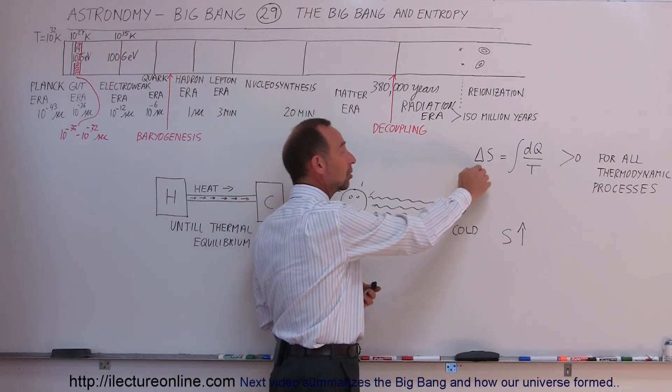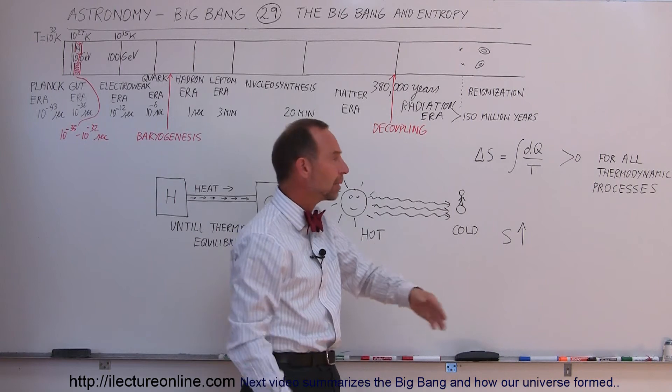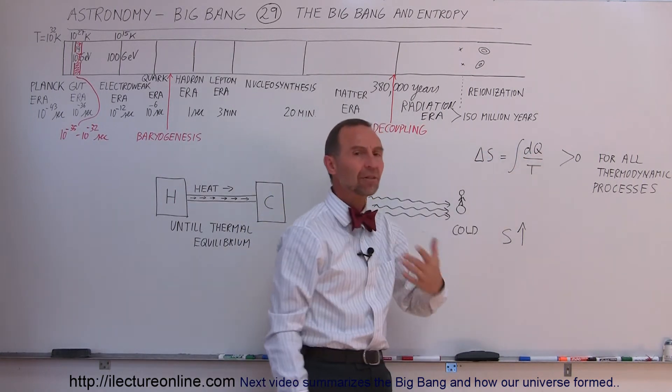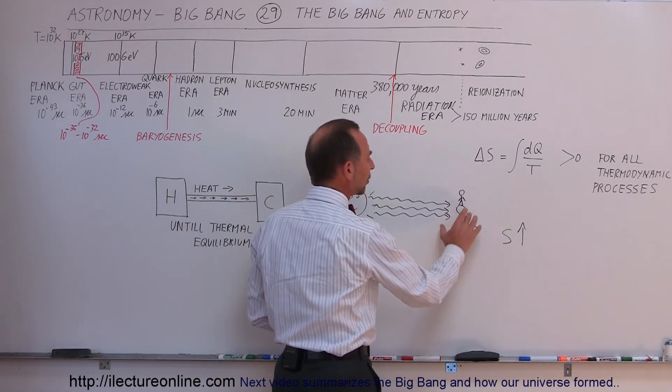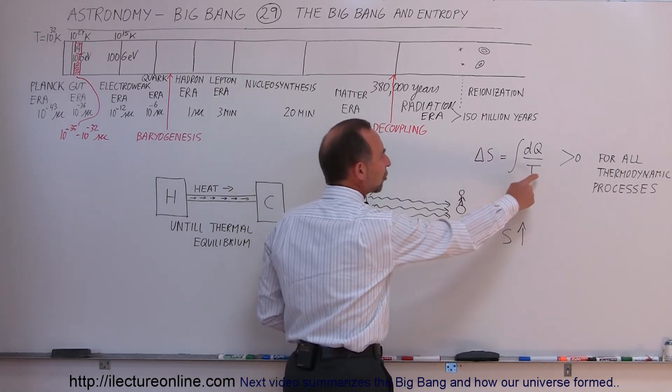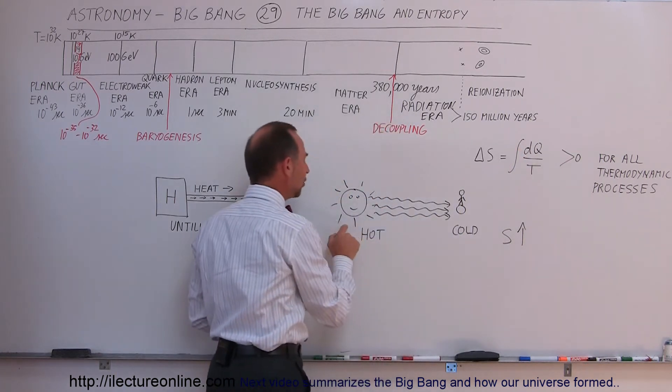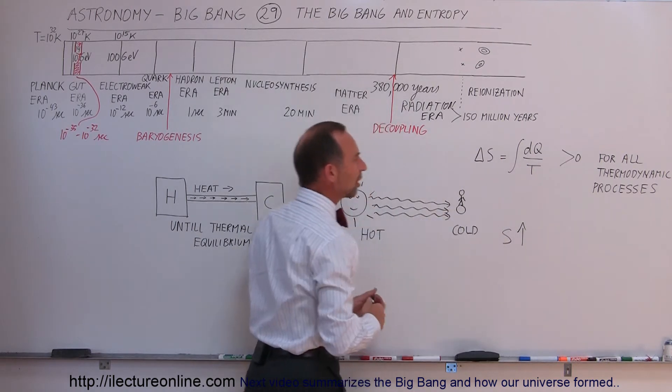And so the way we can calculate the change in entropy, by the way S is used to denote entropy, is equal to the integral of the heat being exchanged divided by the temperature at which this happens. Since the earth is at a colder temperature, that would be a smaller denominator, therefore a greater change in entropy, and since the hot temperature is a larger denominator, therefore a smaller change in entropy.